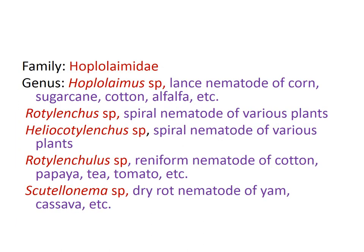Coming to the family Hoplolaimidae — Hoplolaimus is the lance nematode, an ectoparasitic species infecting sugarcane, cotton, alfalfa, and others. The next one is Rotylenchus species, a spiral nematode. Another spiral nematode is Helicotylenchus species, which infects various crop plants including banana.